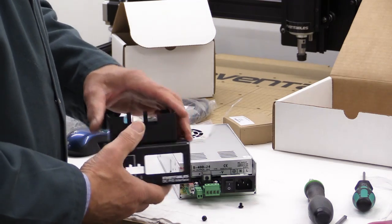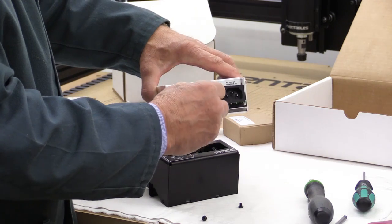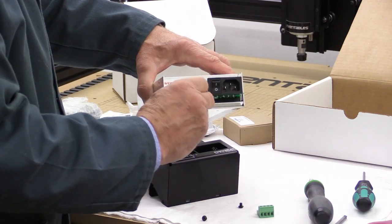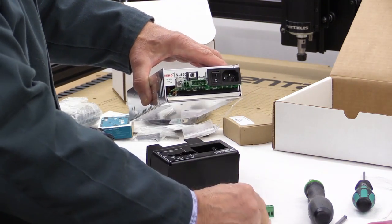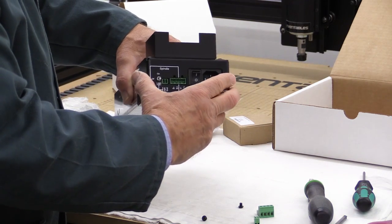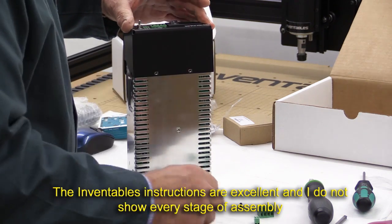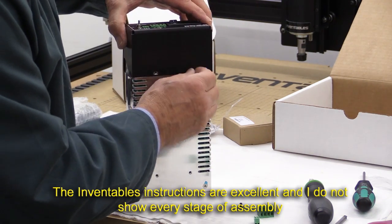When you get to the stage of putting this enclosure over the front of the power supply, you need to take off these plugs that go into the sockets there. Do that very carefully, and then you'll find that this will just slip over very neatly. And then this is secured with two of these screws.